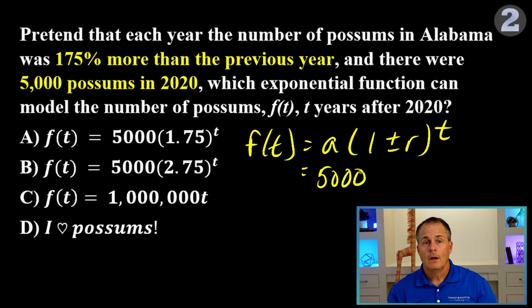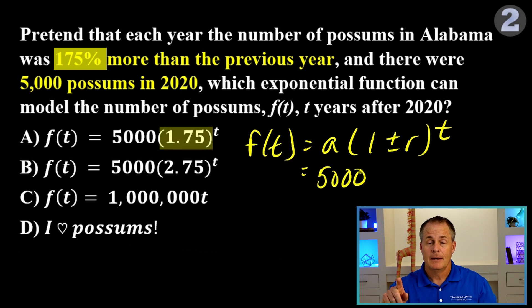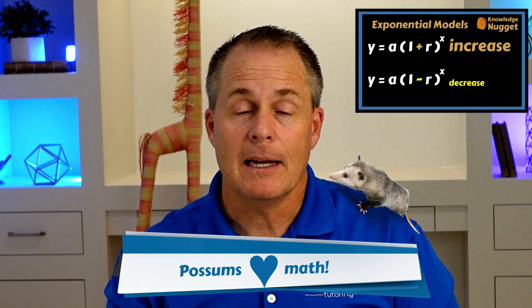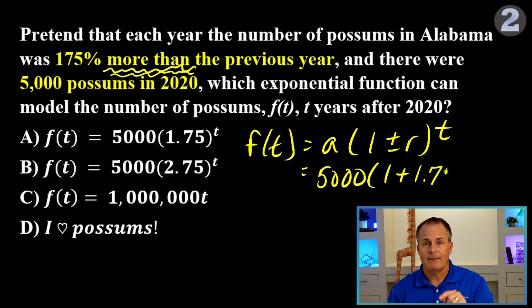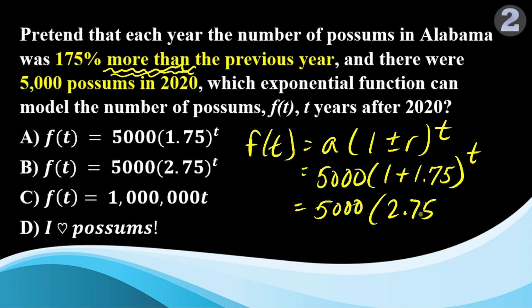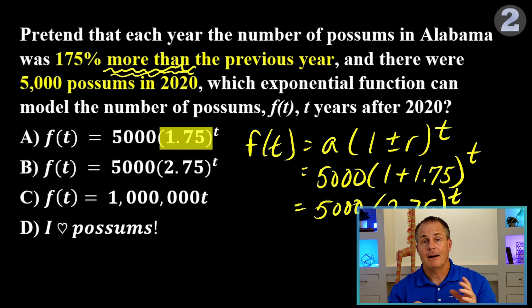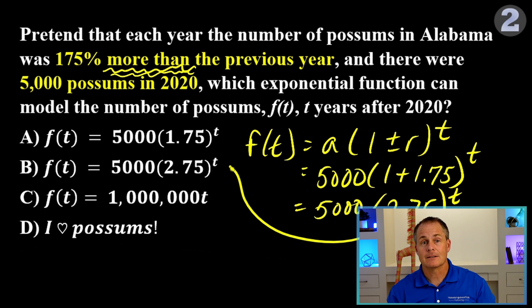Which answer is it? Here's where so many students go wrong. They see the 175 percent and just pick A, because it has a 1.75 right in the answer. If you did that, you're doing it wrong. Let's look closely at the formula. Because the possum population is increasing, we definitely want the version of the formula that uses addition. So, we use 1 plus 1.75, which is 2.75. Students get so used to seeing answers that start with 1.something that they automatically pick A. But when the percent increase is over 100%, it's not going to start with a 1. It's going to start with a 2. So, the correct answer is B.